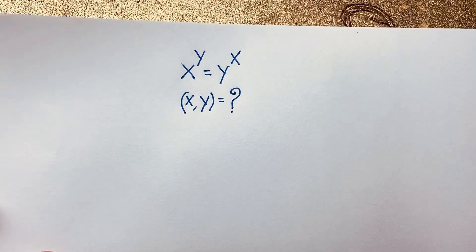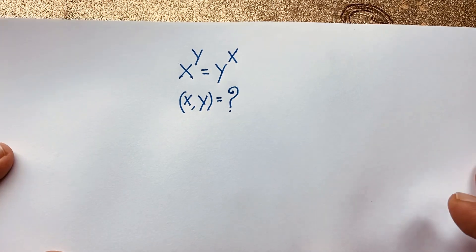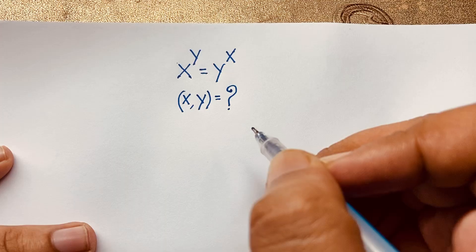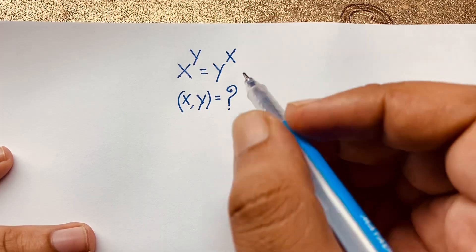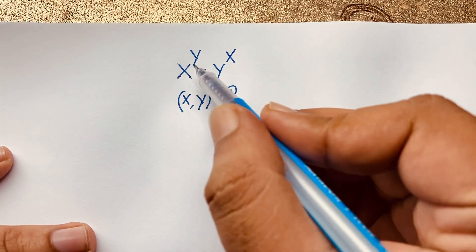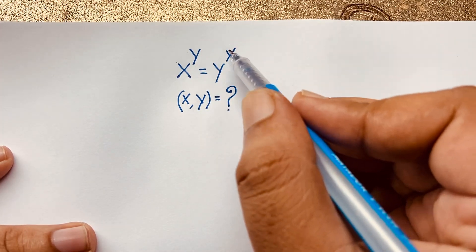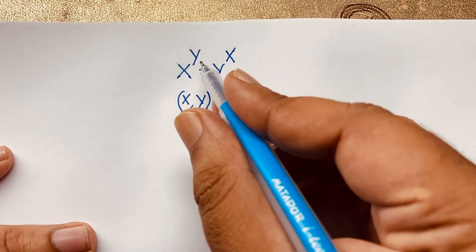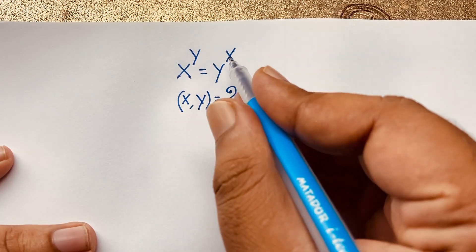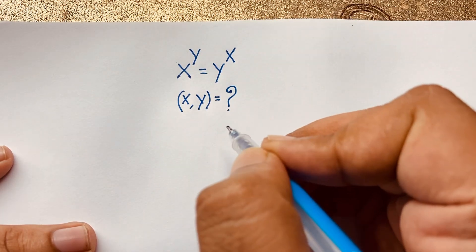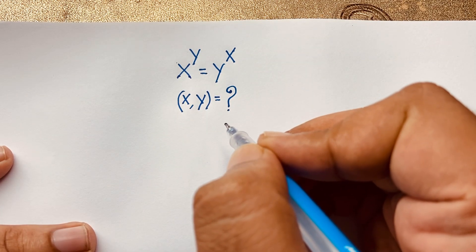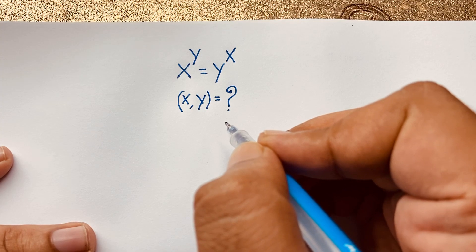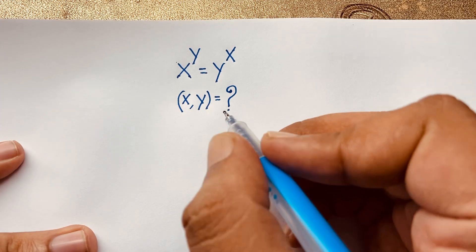Hello everyone. Welcome to Russia's Classroom. Today we have solved a nice math problem. This question is x to the power y is equal to y to the power x, and we will find out the value of x and y in this Math Olympiad question. So how to solve this interesting math problem — solution.